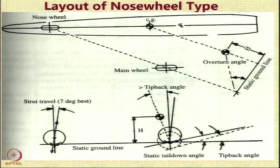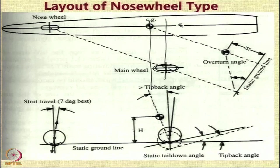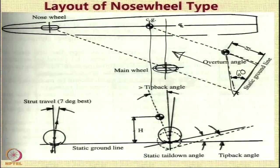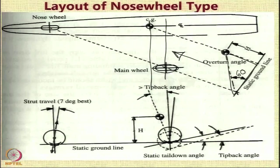For the nose wheel type layout, the main wheel is located some distance behind the center of gravity. Looking at this view, you have an overturn angle which is normally to be kept around 60 degrees. If this angle exceeds 60 degrees, there is a tendency for the aircraft to have problems with lateral stability during landing.